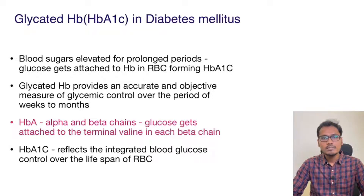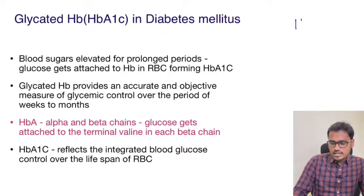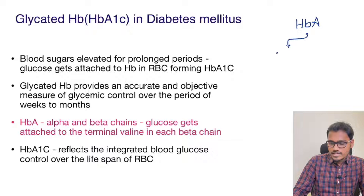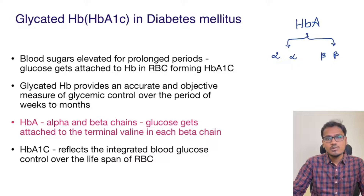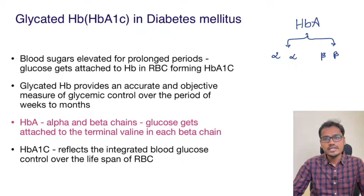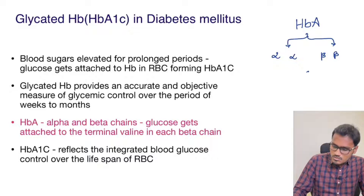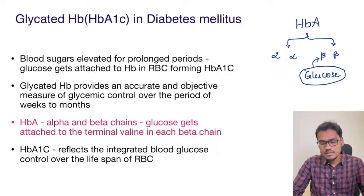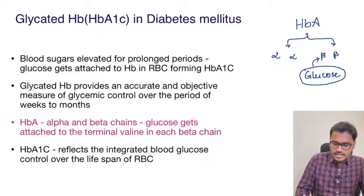Now let's try to understand what happens to hemoglobin in a diabetes patient. Normally hemoglobin A, which is the adult hemoglobin, has two alpha chains and two beta chains. When glucose levels start to increase excessively, the glucose molecules get attached to this beta chain. Whenever glucose molecules get attached to the beta chain, it is called glycated hemoglobin.